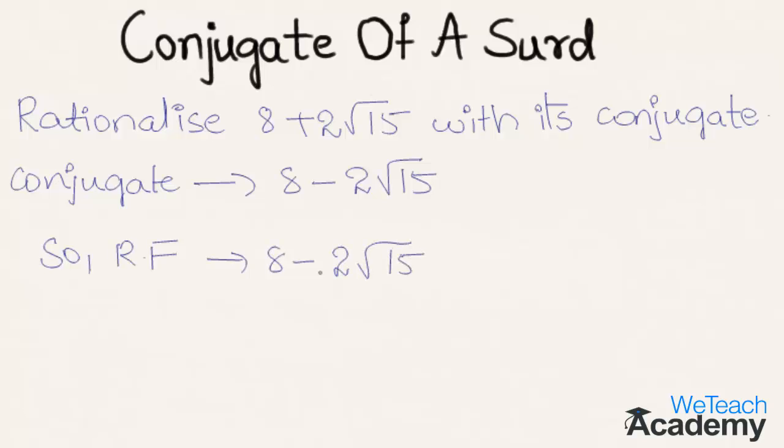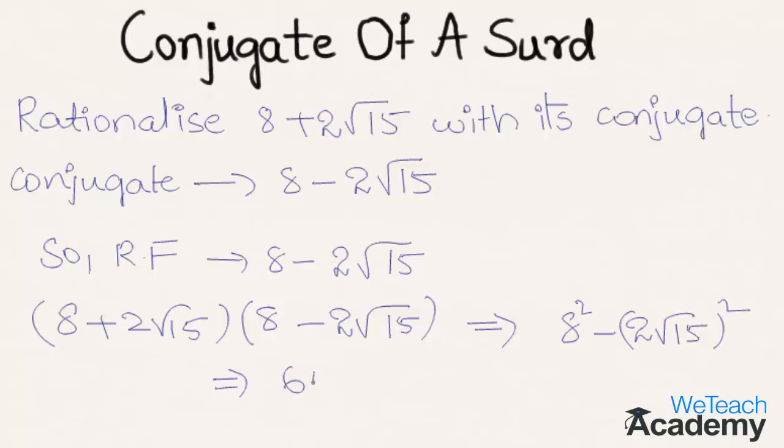Now rationalizing 8 plus 2 root 15 with its conjugate, we get 8 square minus 2 into root 15 whole square. That equals 64 minus 2 square which is 4 into 15. So we get 4 into 15, which implies 64 minus 60 equals 4.